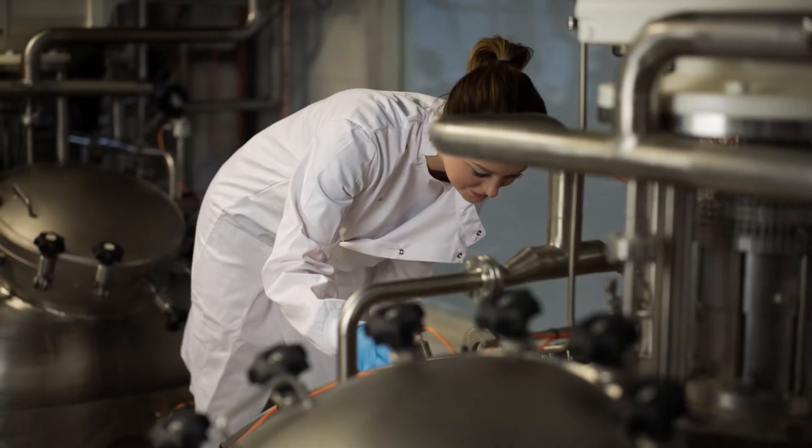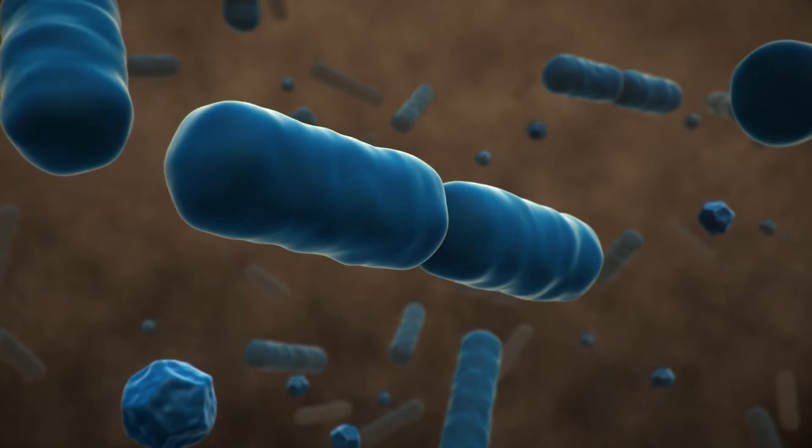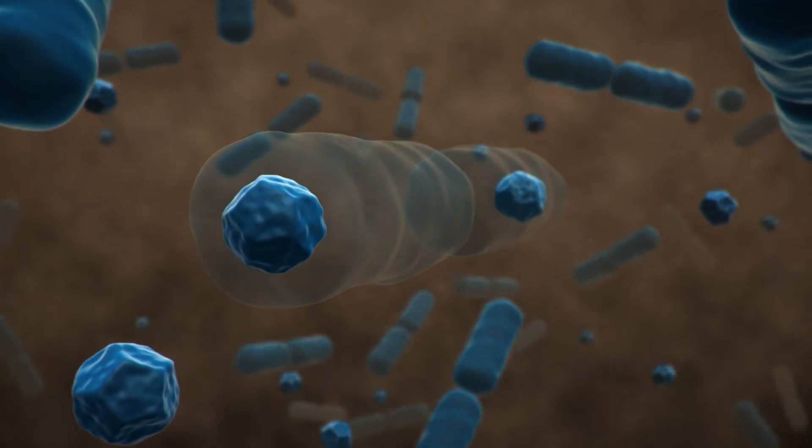Individual strains of bacillus species are grown in fermentation tanks and made into spore form so we can easily reintroduce them into the environment, where they can restore the microbial balance.